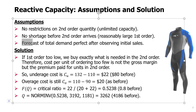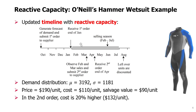The third assumption is that the forecast of total demand will become perfect after observing initial sales. After the first two months of sales, our forecast is no longer uncertain — we know exactly how much more we will sell in the remaining four months. If we don't have enough units, we will order exactly what is necessary in the second order. If demand is low and we already have too many units, we order zero. If expected demand exceeds our first order quantity, we order exactly the amount needed, so there should be no lost sales.